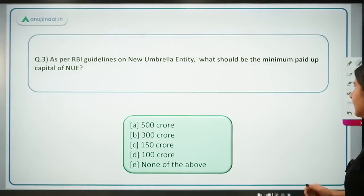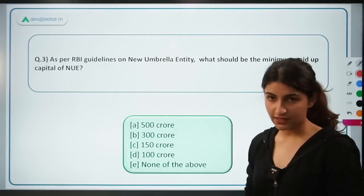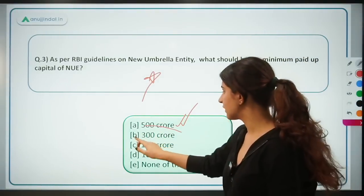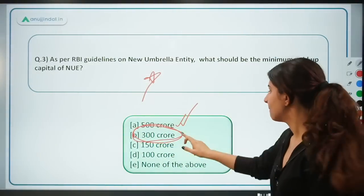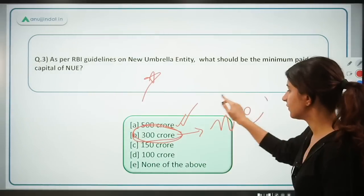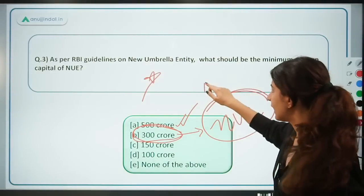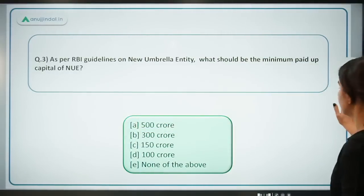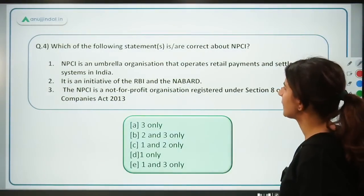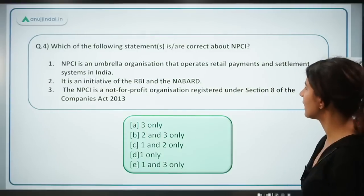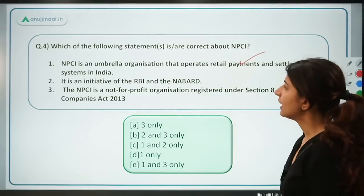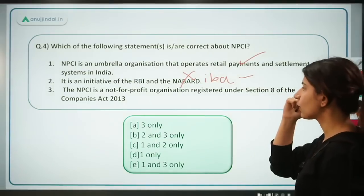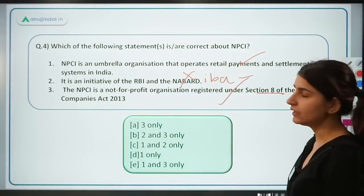As per RBI guidelines on new umbrella entities, the minimum paid-up capital of NUE should be 500 crore. Additionally, the net profit to be maintained by the NUE is 300 crore. Which of the following statements are correct about NPCI? NPCI is an umbrella organization that operates the retail payment and settlement system — true. It is an initiative of RBI and the Indian Banking Association under the Payment and Settlement System Act — true. It is a not-for-profit organization registered under Section 8 of the Companies Act 2013 — true.